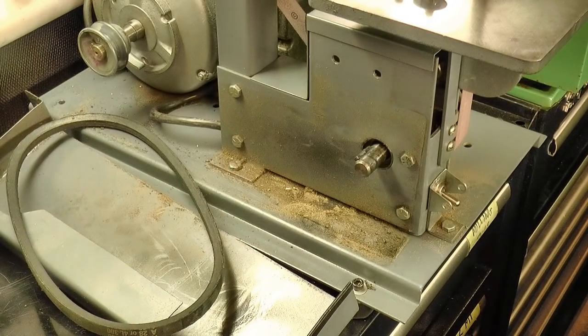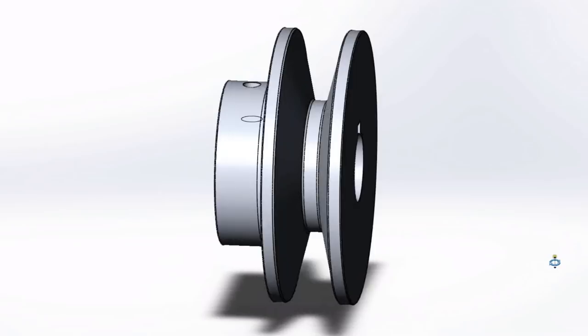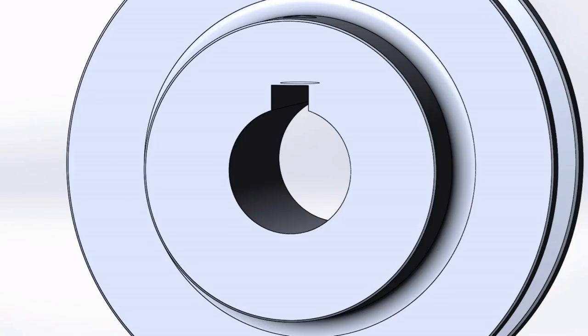Taking dimensions from the original, this is what I'm going to make, and it has a few key features that are going to dictate how I make it. The first is this keyway. Now I don't have an arbor press, so I'm going to do this on the lathe.